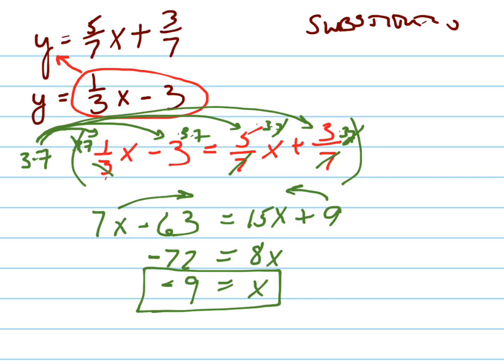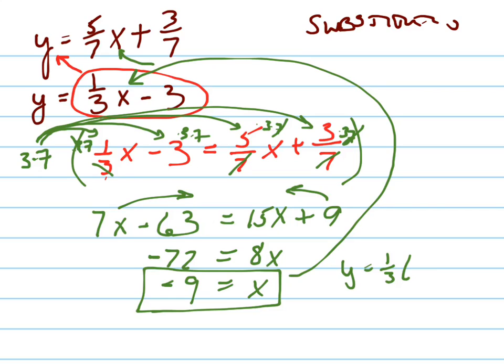That's only half of your solution. Now we've got to find our y value by plugging this in to either place — it doesn't matter which one. We're going to plug it in both just to check. y equals 1/3 times negative 9 minus 3. The 3s cancel because 9 and 3 have a 3 in common. So it's equal to negative 3 minus 3, which is negative 6. So y is negative 6.